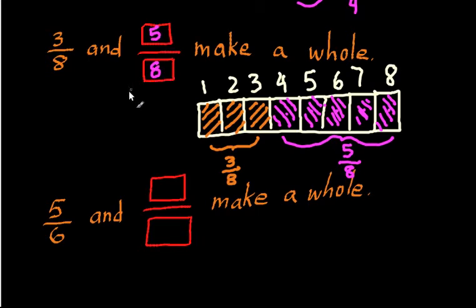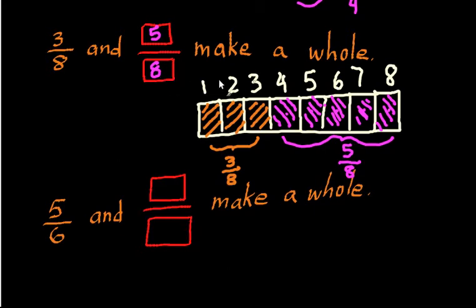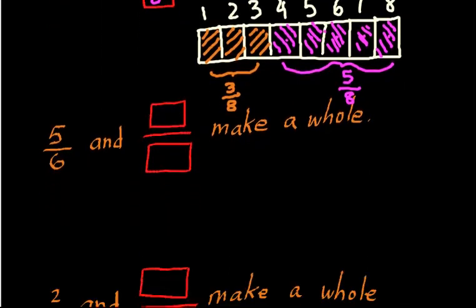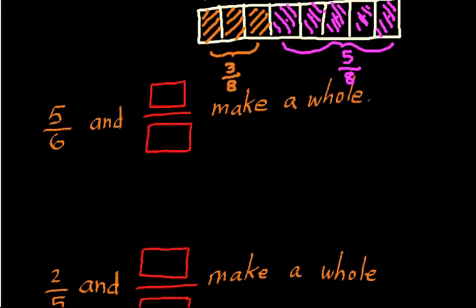Another way to think about it is if I took a rectangle and made it into eight pieces, you would need to get all eight pieces back to be able to reconstruct the original rectangle. If I give you three pieces initially, you would need five more pieces to make a whole. We'll do one last problem before I close out this video, and hopefully this is starting to make more and more sense.